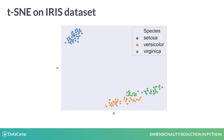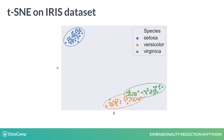TSNE will maximize the distance in two-dimensional space between observations that are most different in a high-dimensional space. Because of this, observations that are similar will be close to one another and may become clustered. This is what happens when we apply TSNE to the iris dataset. We can see how the setosa species forms a separate cluster, while the other two are closer together and therefore more similar.